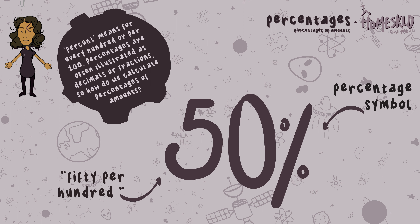In this case we have 50%. We have the value and the percentage symbol. If I was to illustrate what 50% of an amount would look like, everything would be halved. Why, you may ask? Well, 50% is 50 for every 100, and 50 is exactly half of 100.